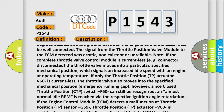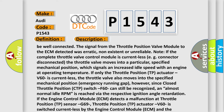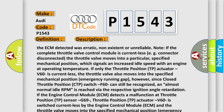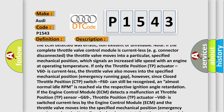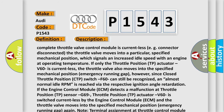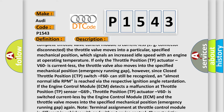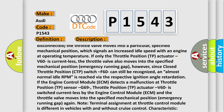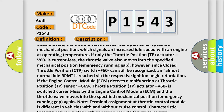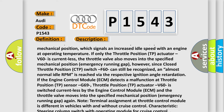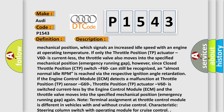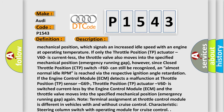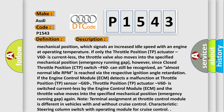Note: if the complete throttle valve control module is currentless — e.g., connector disconnected — the throttle valve moves into a particular specified mechanical position, which signals an increased idle speed with an engine at operating temperature. If only the throttle position actuator V60 is currentless, the throttle valve also moves into the specified mechanical position (emergency running gap). However, since closed throttle position switch F60 can still be recognized, an almost normal idle RPM is reached by the respective ignition angle retardation. If the ECM detects a malfunction at throttle position sensor G69, the throttle position actuator V60 is switched currentless and the throttle valve moves into the specified mechanical position (emergency running gap). Note: terminal assignment at the throttle control module differs in vehicles with and without cruise control.